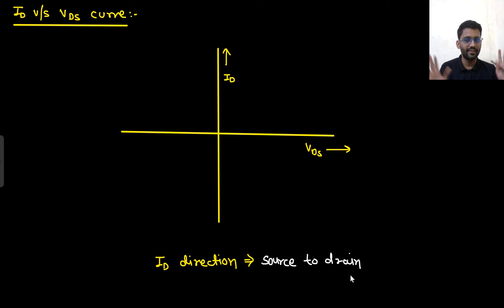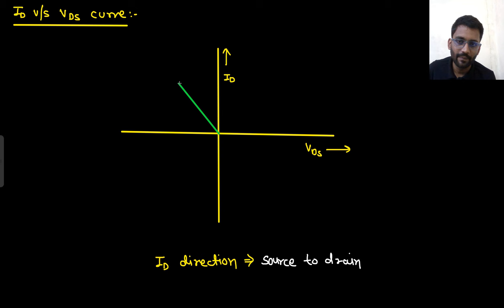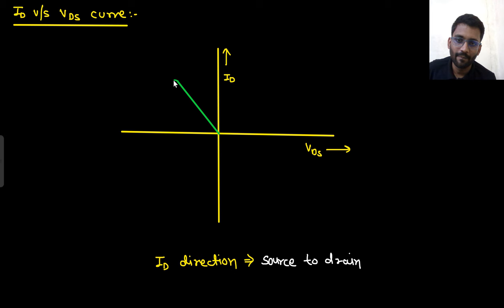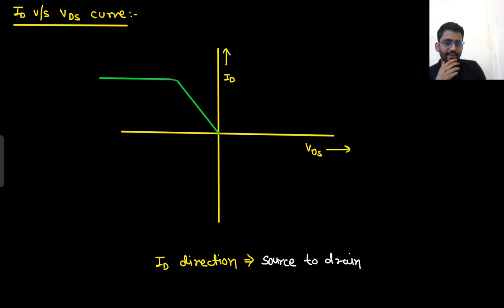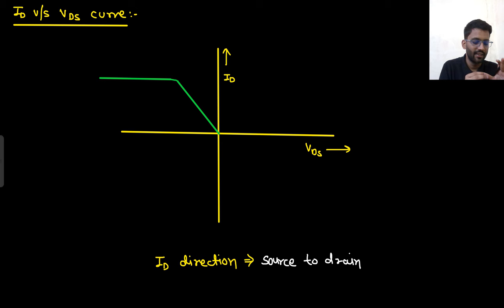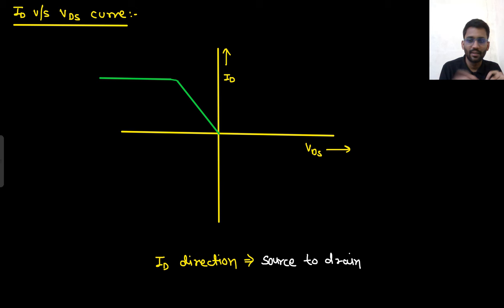For p-channel MOSFET, VDS is negative. As VDS becomes more negative, reverse bias increases, depletion region increases, and current increases, until at a certain negative VDS the current saturates because channel charge carriers become scarce. The ID vs VDS graph is in the negative VDS region but has the same shape — increases then saturates. Depletion type MOSFETs are not commonly used for amplification; the reasons for this will be discussed next.